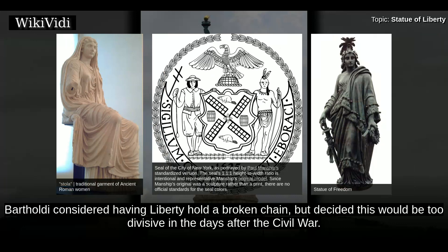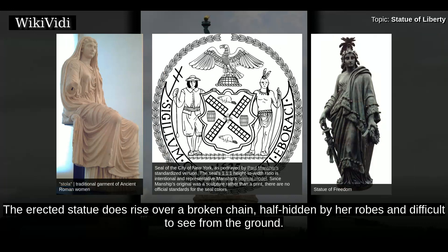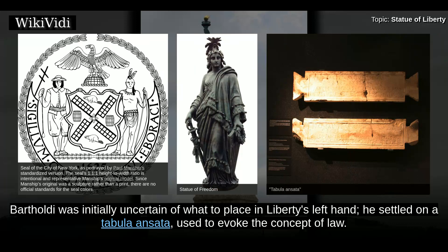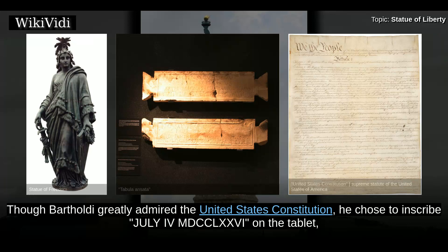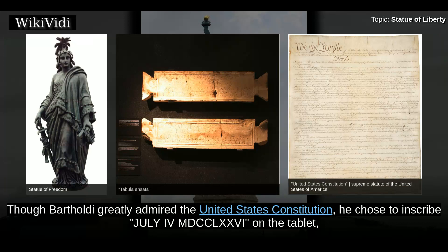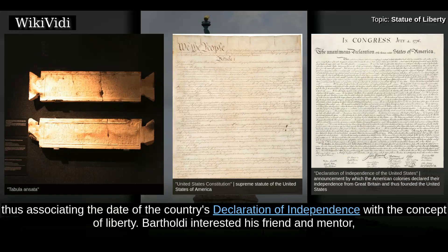Bartholdi made alterations in the design as the project evolved. Bartholdi considered having Liberty hold a broken chain, but decided this would be too divisive in the days after the Civil War. The erected statue does rise over a broken chain, half-hidden by her robes and difficult to see from the ground. Bartholdi was initially uncertain of what to place in Liberty's left hand. He settled on a tabula ansata, used to evoke the concept of law. Though Bartholdi greatly admired the United States Constitution, he chose to inscribe July IV MDCCLXXVI on the tablet, thus associating the date of the country's declaration of independence with the concept of liberty.